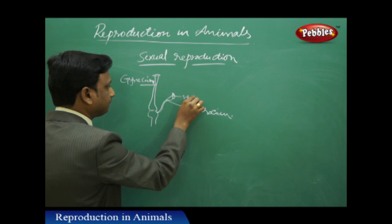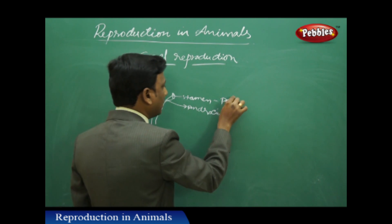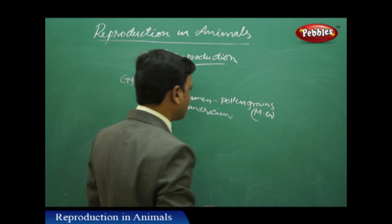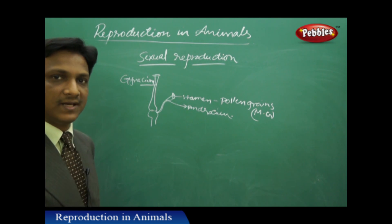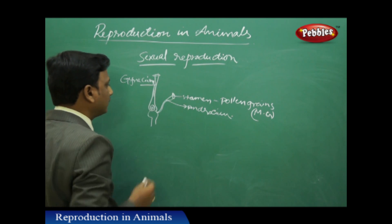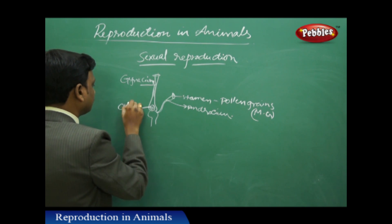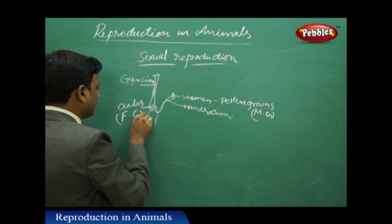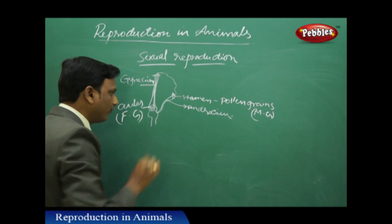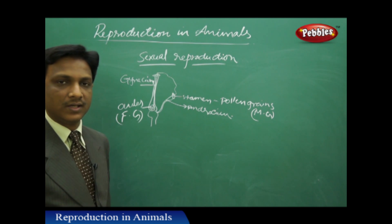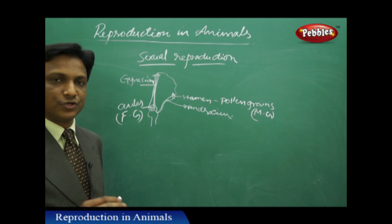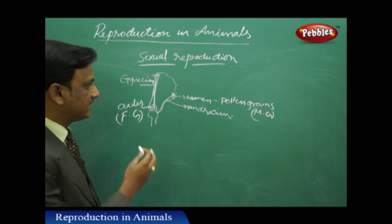The androecium has stamens, and the stamens have pollen grains. The pollen grains contain male gametes. The gynoecium has stigma and pistil, and inside the ovary, ovules are present — ovules contain female gametes. The pollen grains reach the stigma, and the male gametes reach the ovules, where fertilization takes place in the ovary. Fertilization is the fusion of male and female gametes — that is sexual reproduction in plants.